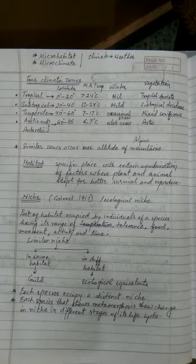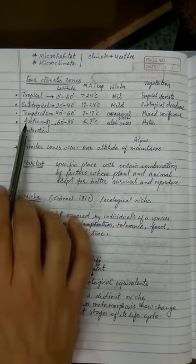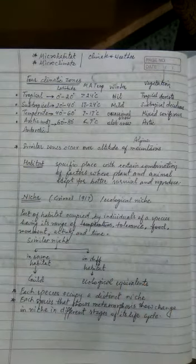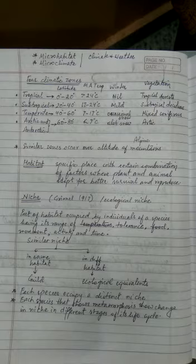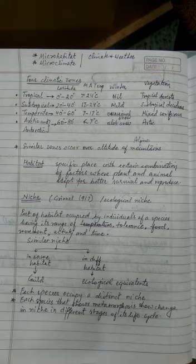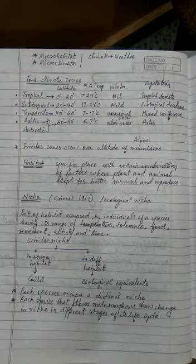Similar zones are also found in mountains. A mountain in the tropical region will have tropical, subtropical, temperate, and alpine zones. A mountain in the subtropical area will have subtropical, temperate, and alpine zones, and a mountain in the temperate region will have only temperate and alpine zones. So according to altitude, similar types of climatic zones are found. We also learned the definition of ecological niche — it is the part of habitat occupied by a species, having its own range of tolerance, food, movement, activity, and timing of activity. Organisms occupying a similar niche in the same habitat are called guilds, and those occupying a similar niche in different habitats are called ecological equivalents.